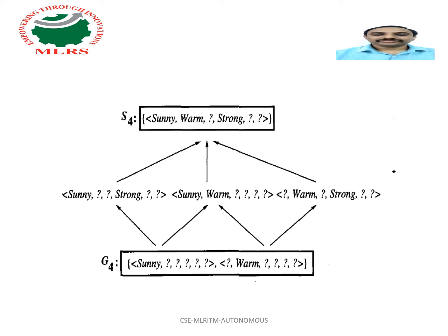The entire version space, including those hypotheses bounded by S4 and G4, is shown in the diagram.